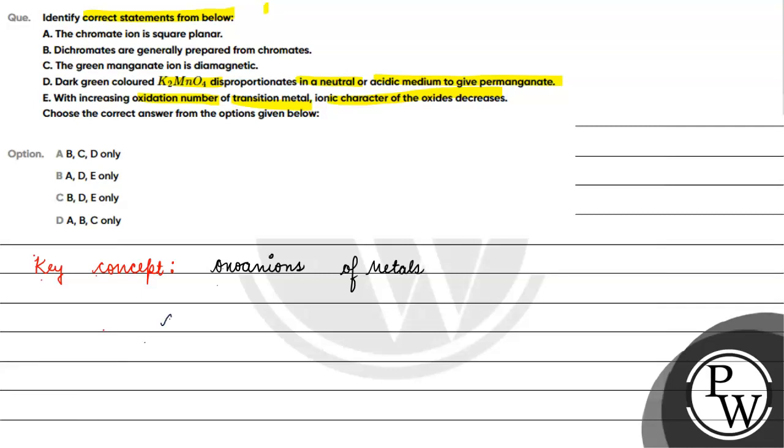First, let's examine chromate ion. Chromate ion is CrO4 2-. Chromium's oxidation state: x plus 4 times minus 2 equals minus 2, so x equals plus 6. Chromium's general electronic configuration is argon 3d5 4s1.